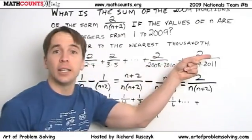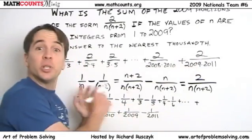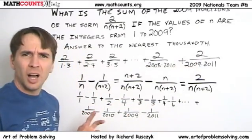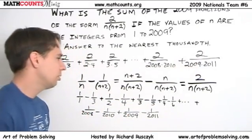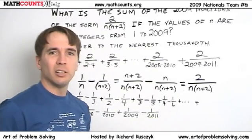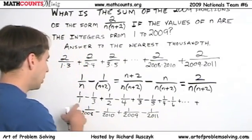And we've taken this really complicated sum and we've turned it into a sum that's really complicated. Oh! It looked like a good idea, too. So, let's see. We've got 1 over 1. Wait a second.